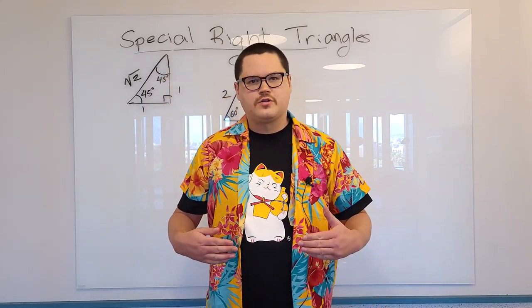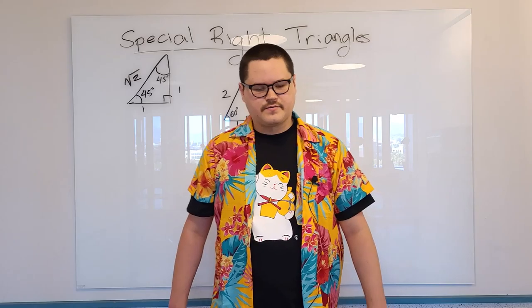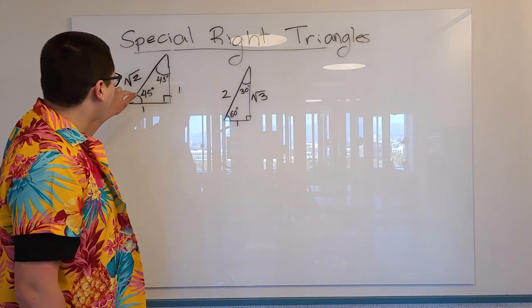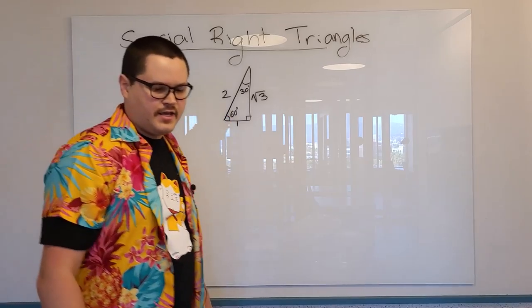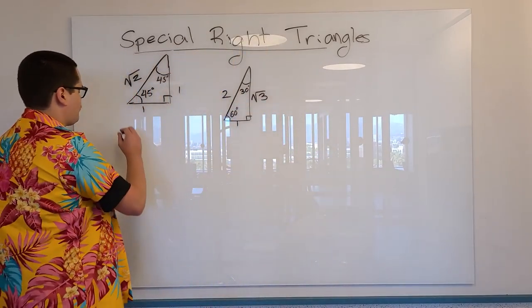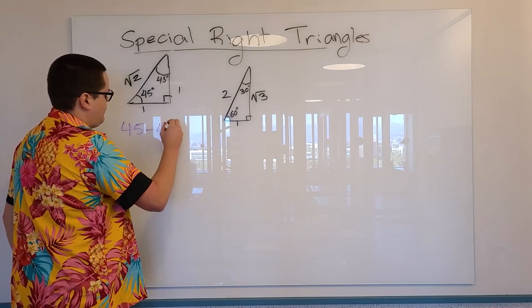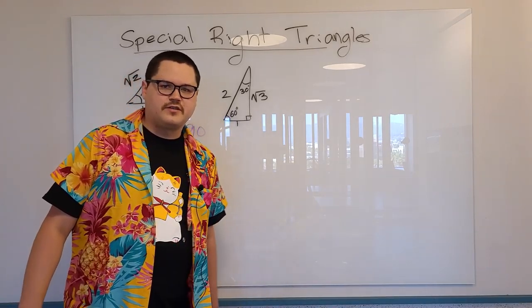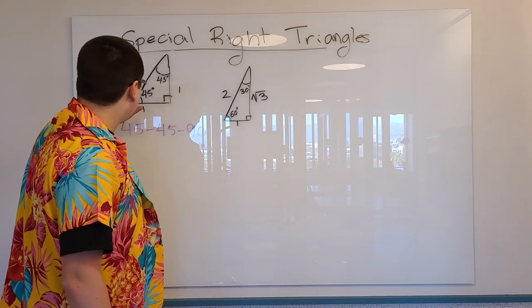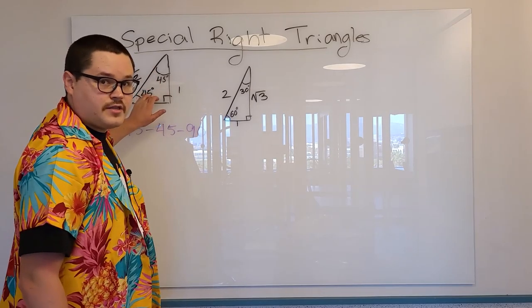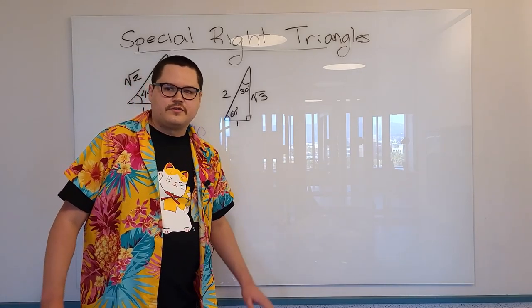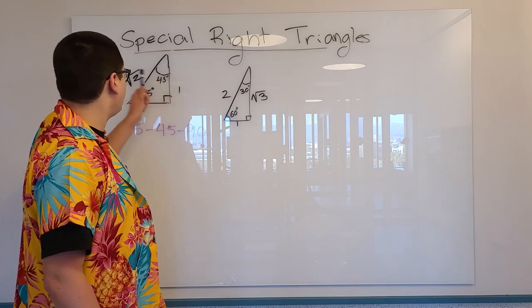Okay, so today we're going to talk about special right triangles. Now there's two types of special right triangles. They're on the board behind me. The first one is called 45-45-90. Let me write that down. Why is it called that? Because those are the measures of the angles. You have 45 degrees, you have 45 degrees, then you have a right angle right here. Now the side ratios of this triangle are 1 to 1 to square root of 2.